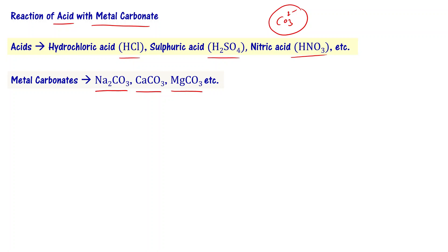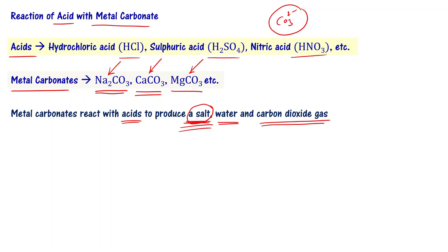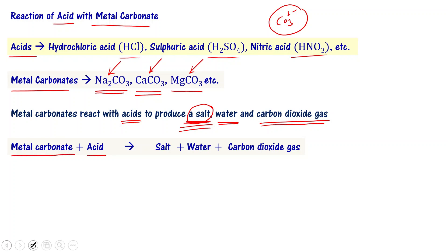Now we want to see what happens when acids react with metal carbonates. When acids react with metal carbonates they produce a salt, water, and carbon dioxide. The salt formed depends on the metal used — sodium gives a sodium salt, calcium gives a calcium salt, magnesium gives a magnesium salt. In formula form: metal carbonate + acid → salt + water + CO2.